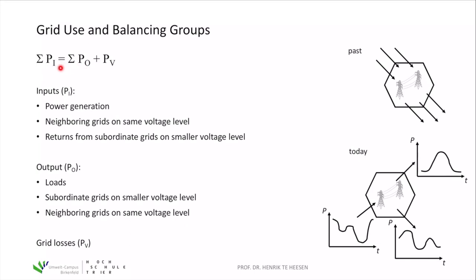This power balance equation must always be fulfilled. If there is more power input than output, the frequency increases, so the operator decreases power generation. If output exceeds input, the operator can increase power generation or reduce loads. Balancing this equation — ensuring input and output are in balance — is the main task of TSOs and operators at every grid level.